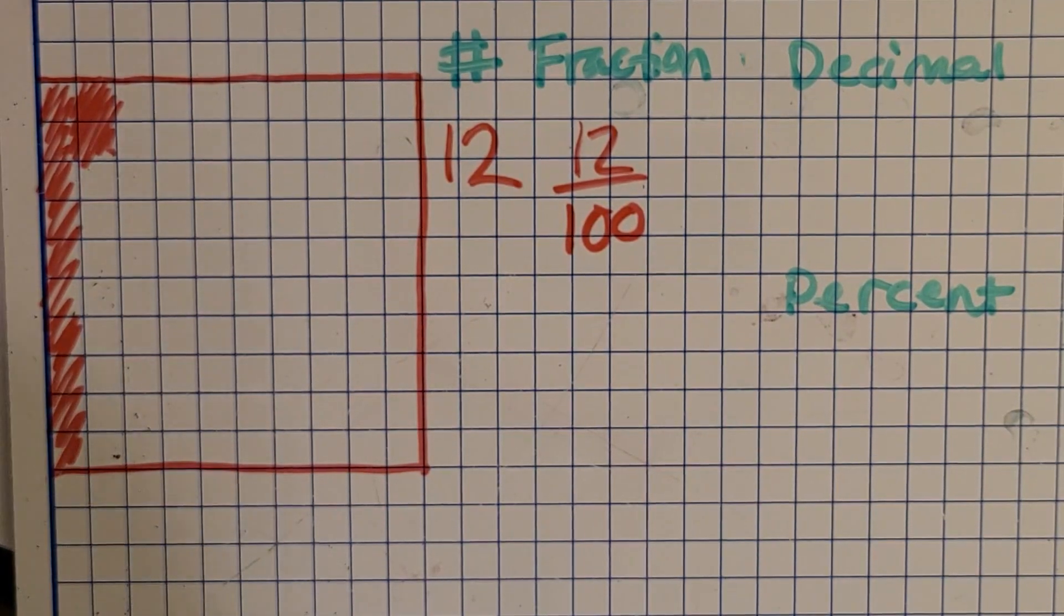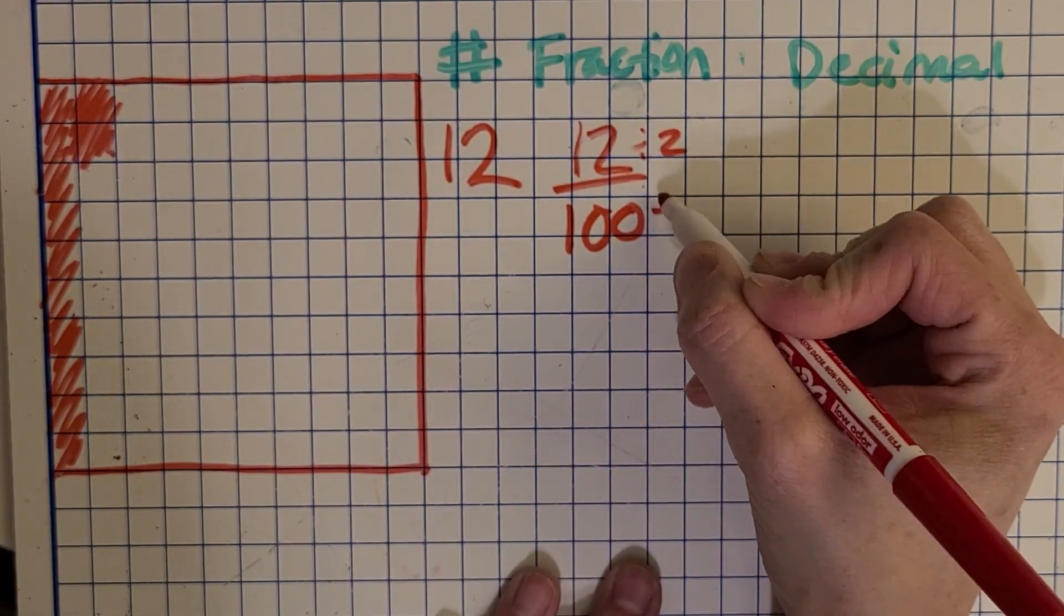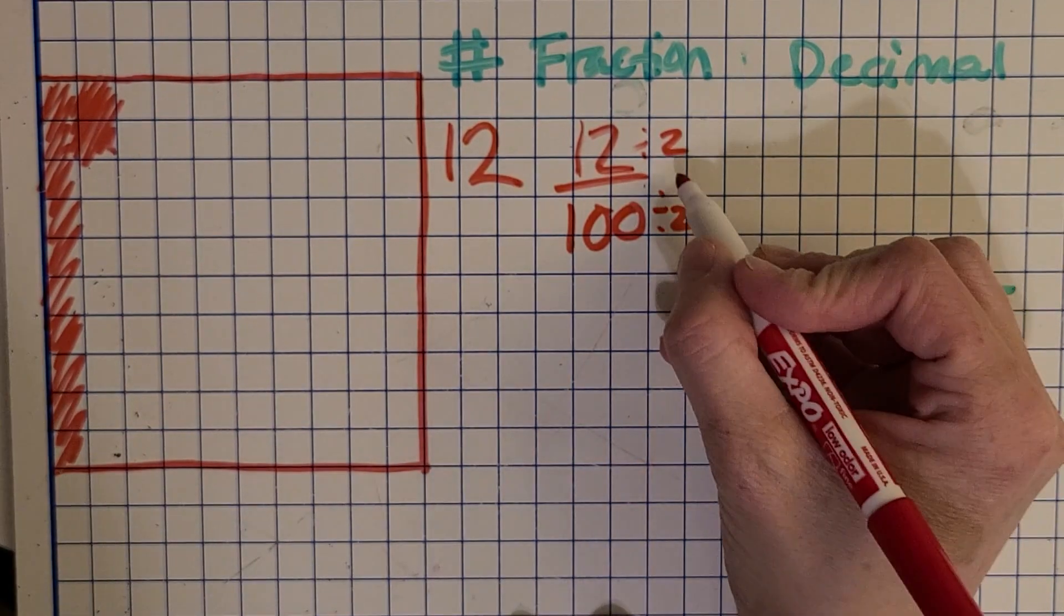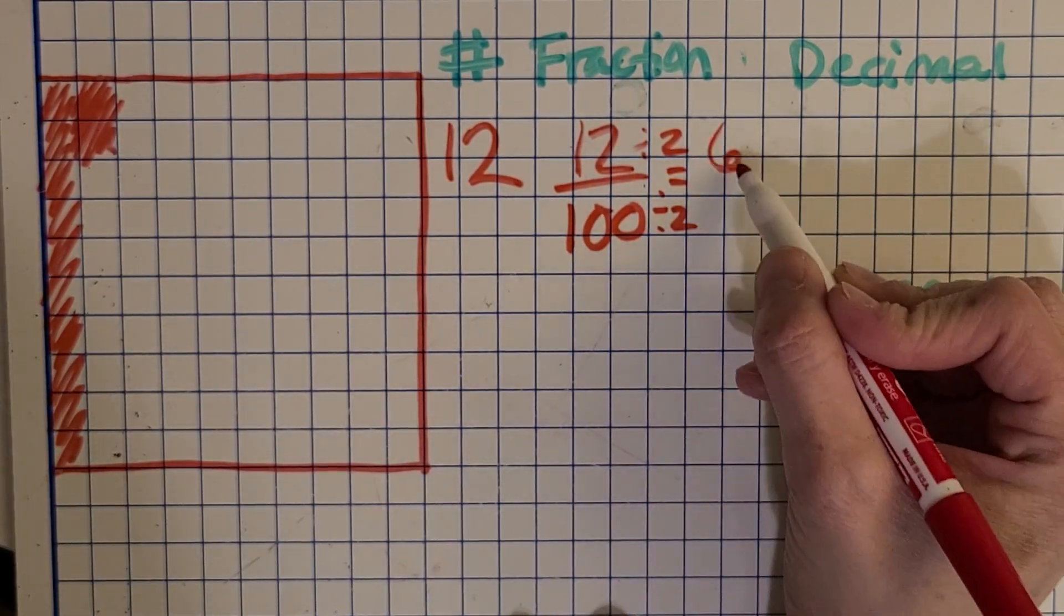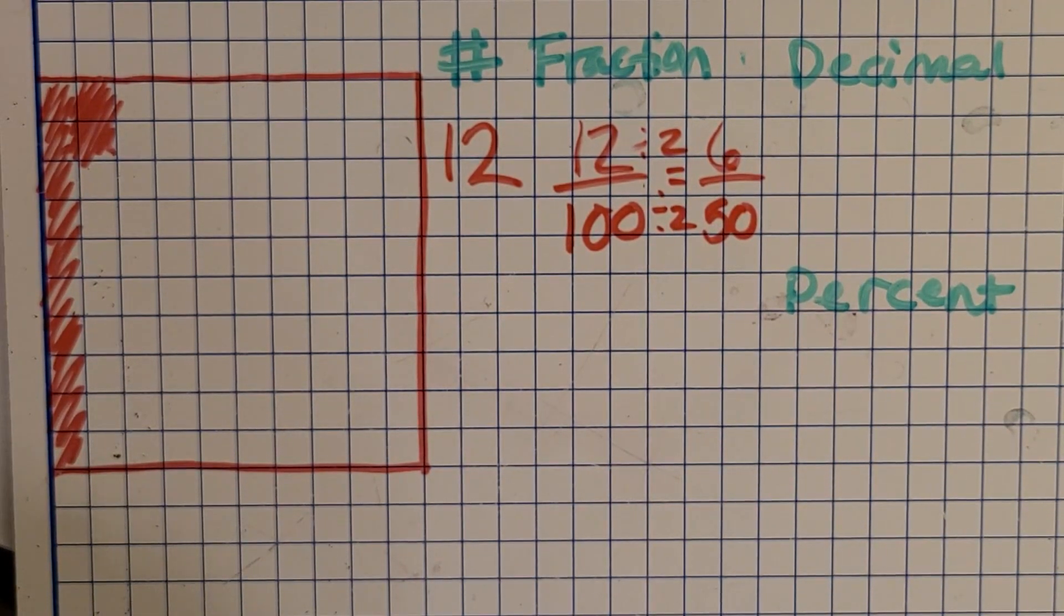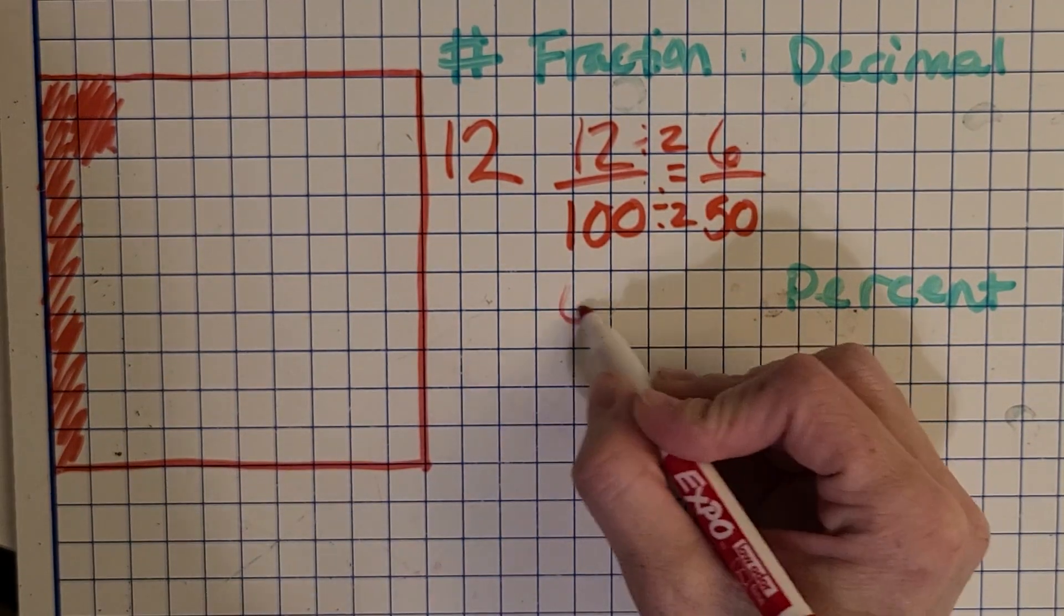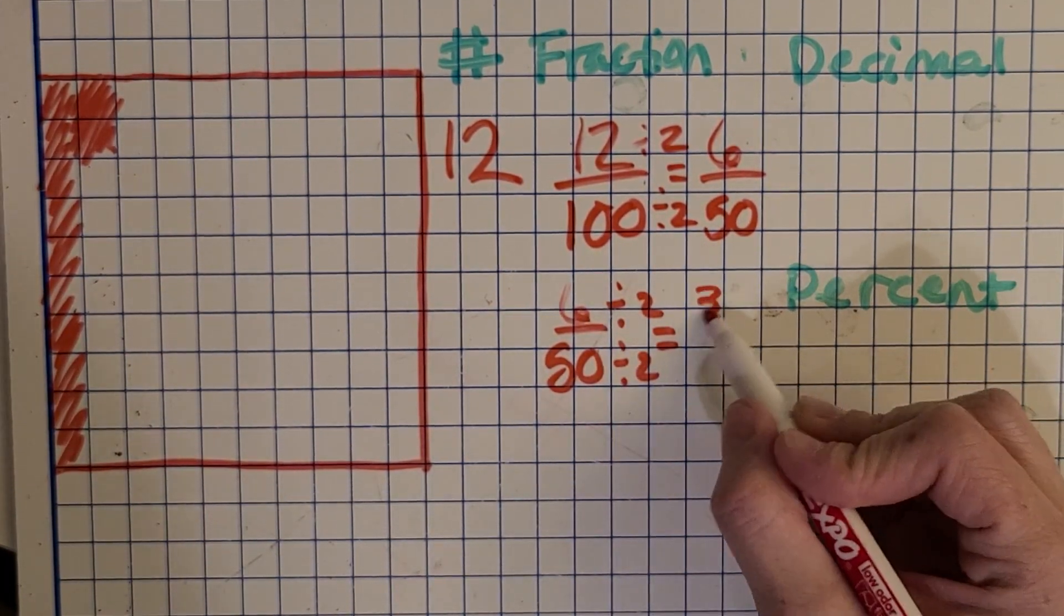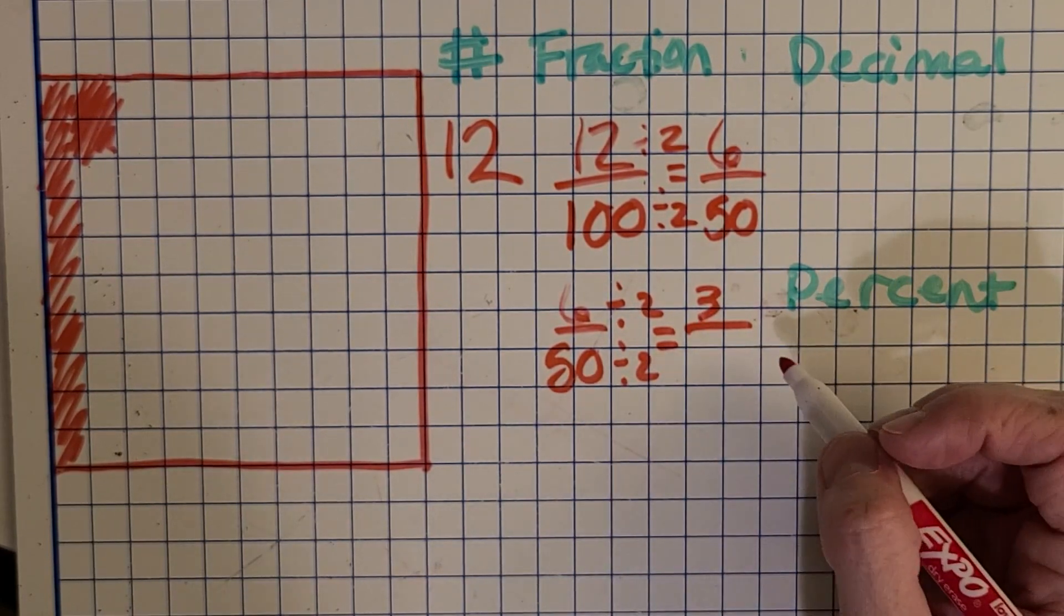Now I always like to think about can I simplify that fraction at all? So there's probably a couple of different ways that some of you did this. So you might have noticed that these both are even. So let's divide by 2. If you do that to the numerator and denominator, then you're finding an equivalent fraction. We get 6 and 50. But then you might also notice that I can divide again because those are both even also. So let's do that. Divide by 2, divide by 2, and we get 3 and 50 divided by 2 is 25.